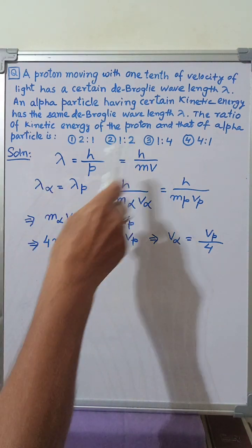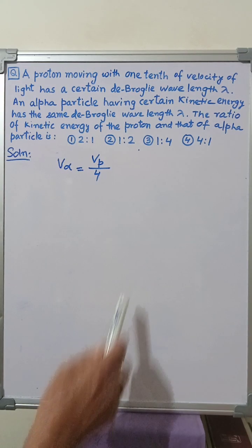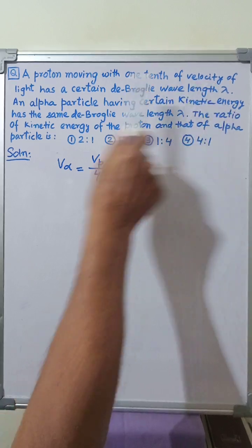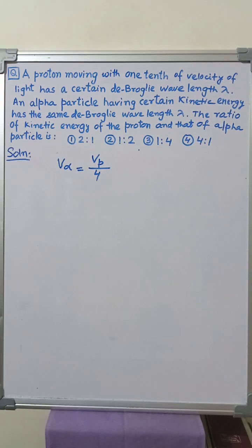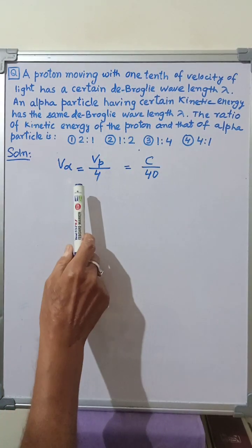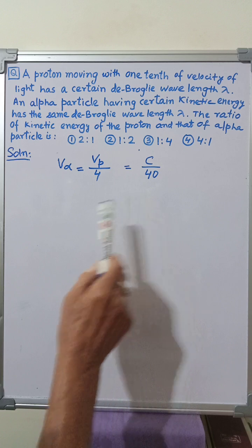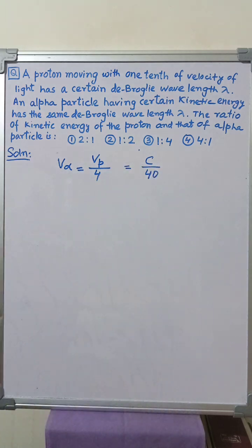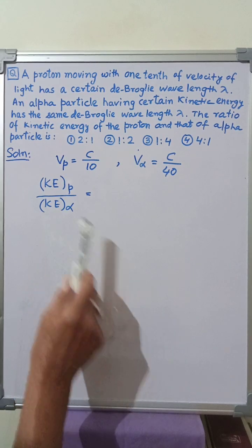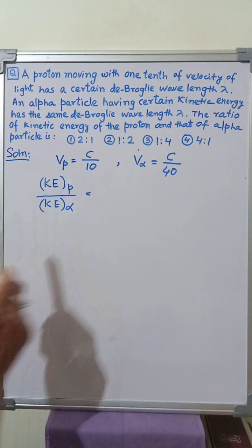It is given in the question that the velocity of the proton is one tenth of the velocity of light, so v_p equals c by 10. Therefore v_alpha equals v_p by 4, which equals c by 40. We are now required to find the ratio of kinetic energy of the proton to that of the kinetic energy of the alpha particle.